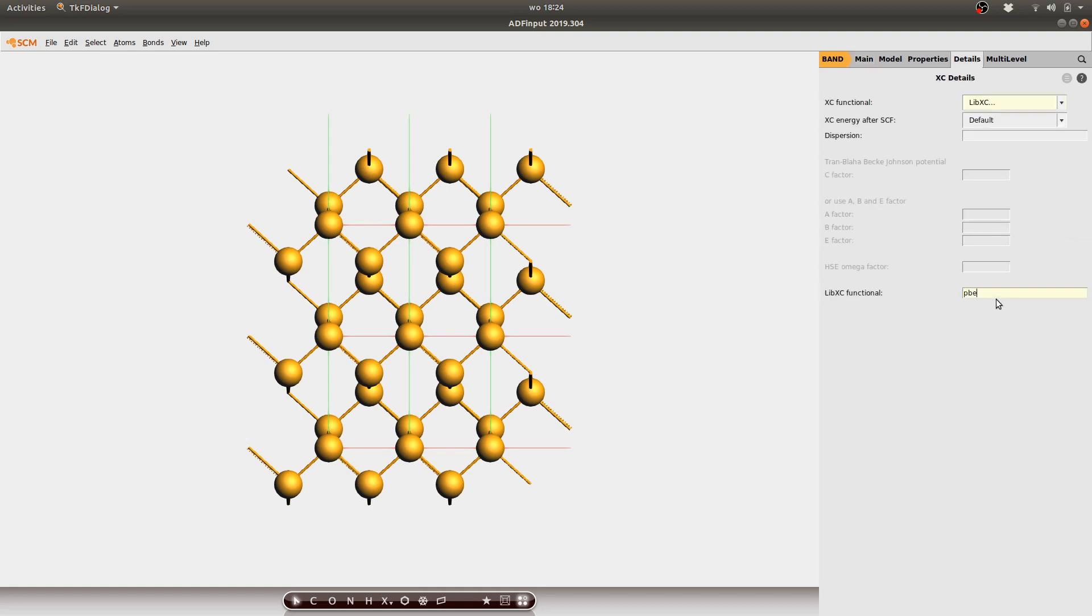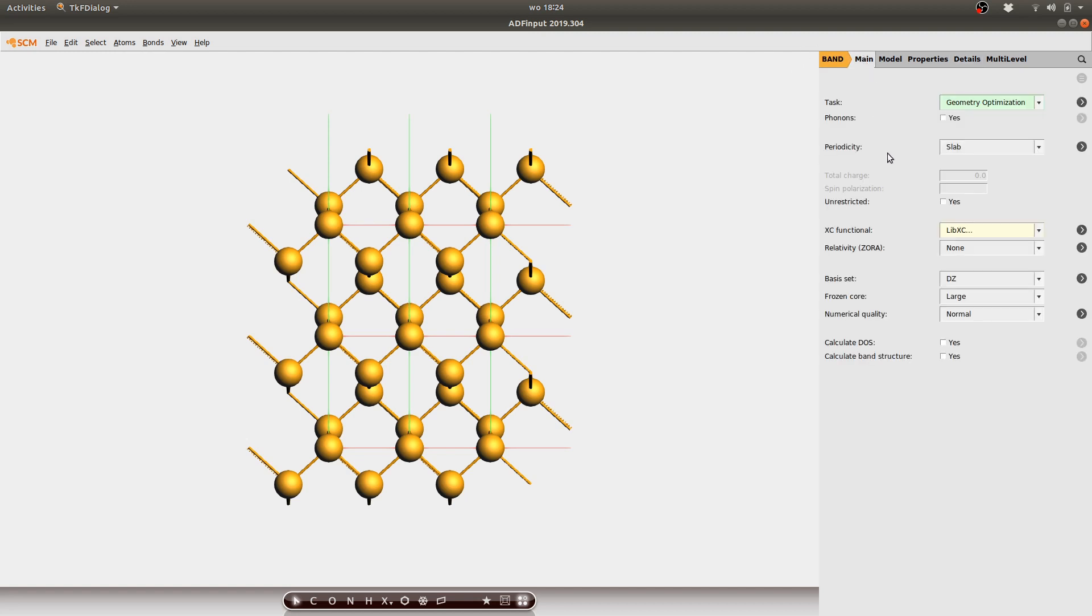I type in here PBE in order to use this functional which is a pretty standard GGA. I select a triple ZRP basis set which is supposed to be large enough to do this calculation to represent this model accurately. I avoid using frozen core and I select a good numerical quality preset.